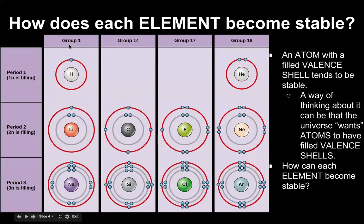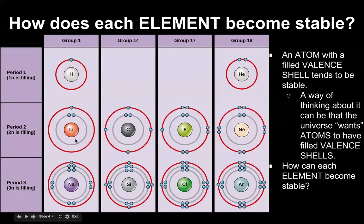Let's look at group 1. Group 1 has 1 electron on the outside valence shell. An easy way to make any of these atoms stable is to just get rid of this one electron — you can add 7 electrons if you want, but it's actually easier to just get rid of this one valence electron. So if you have lithium or sodium, just get rid of that one electron on the outside, and they would both have a positive 1 charge. Everything in group 1 would have a positive 1 charge because the universe wants atoms to have filled valence shells.